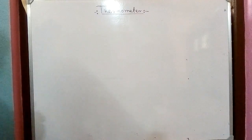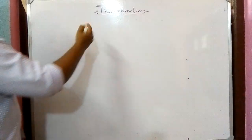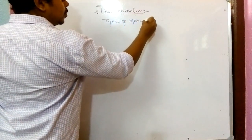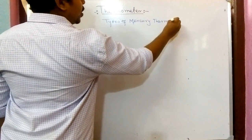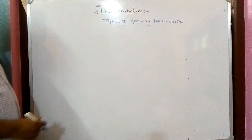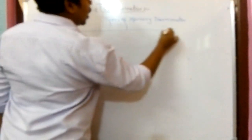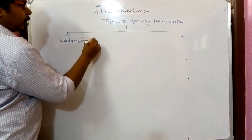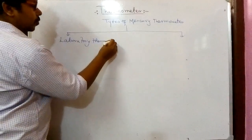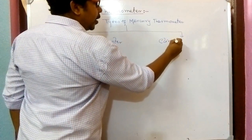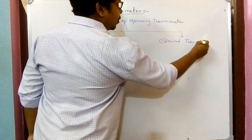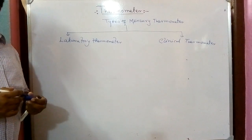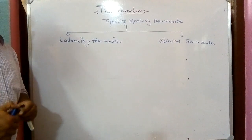As we have discussed the mercury thermometer, we now see the types of mercury thermometers. In general use there are two kinds: the first one is the laboratory thermometer and the second one is the clinical thermometer. In both thermometers mercury is used, so both are mercury thermometers, but there are differences between them.